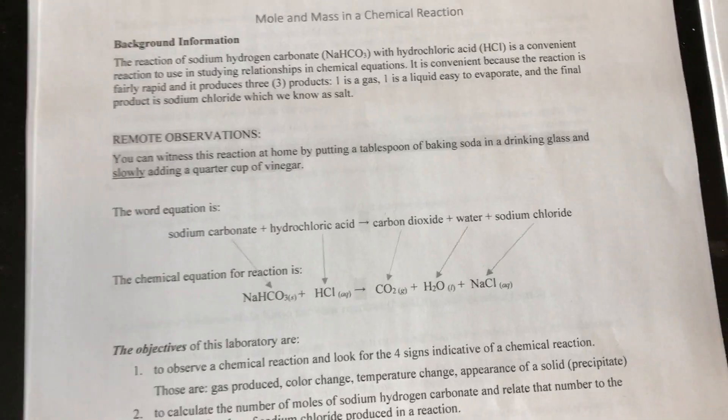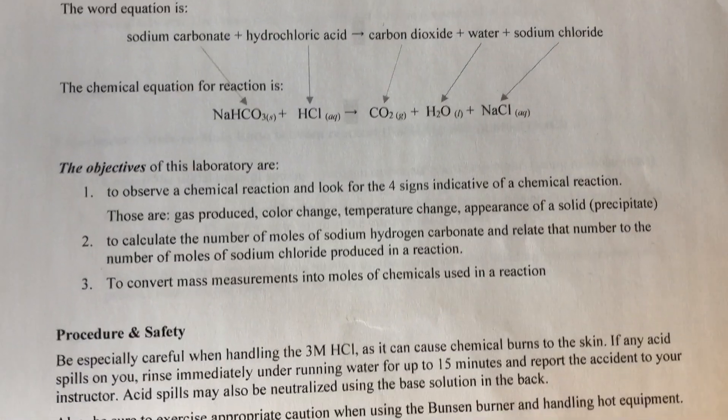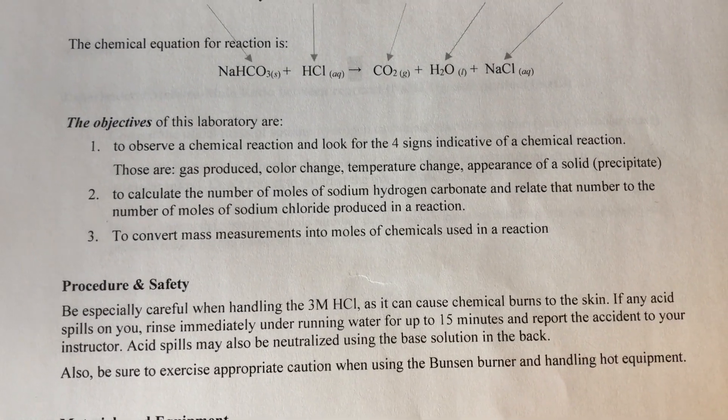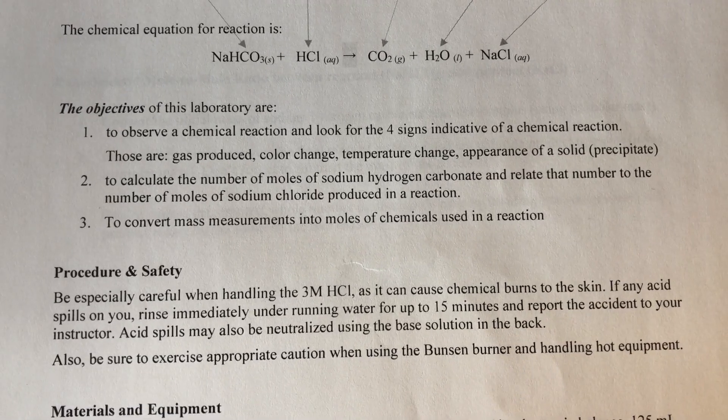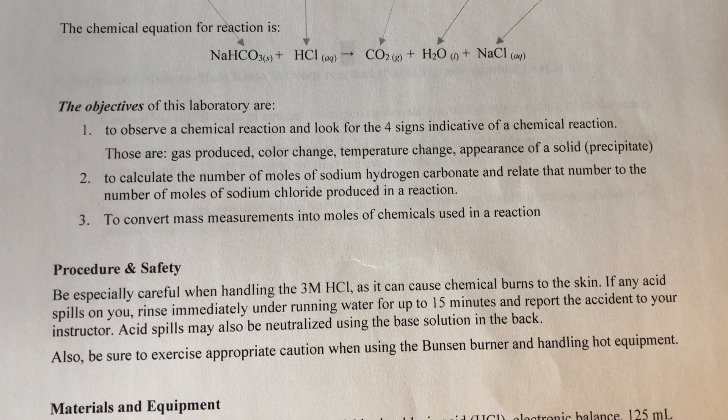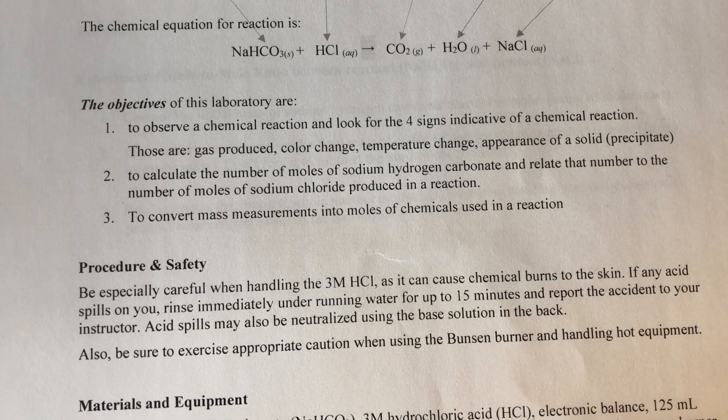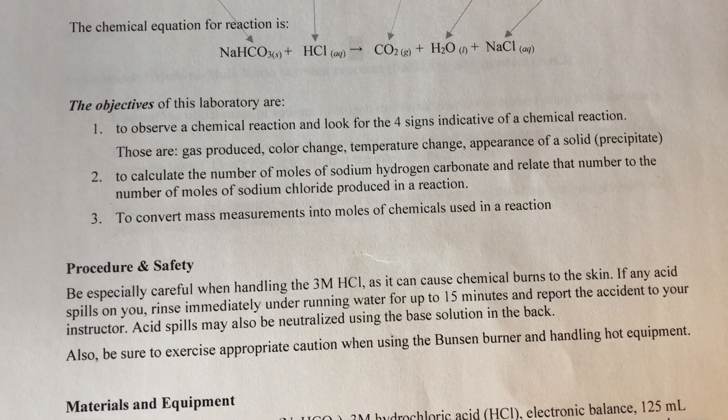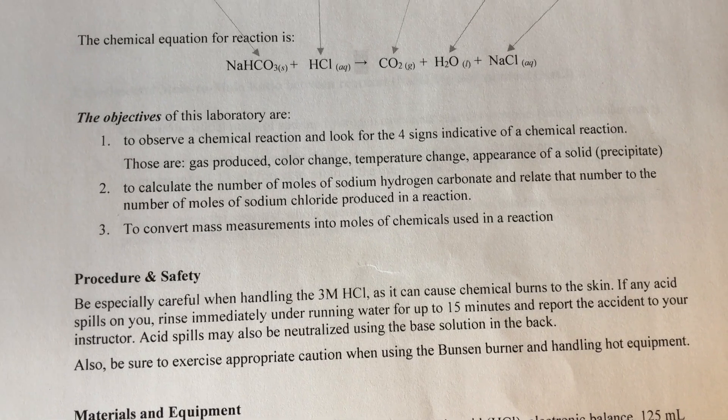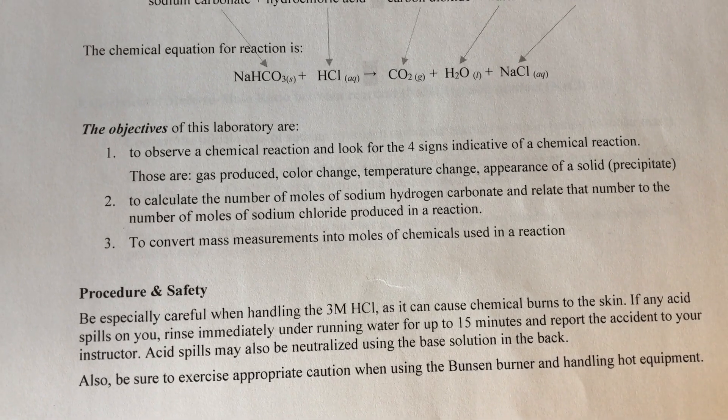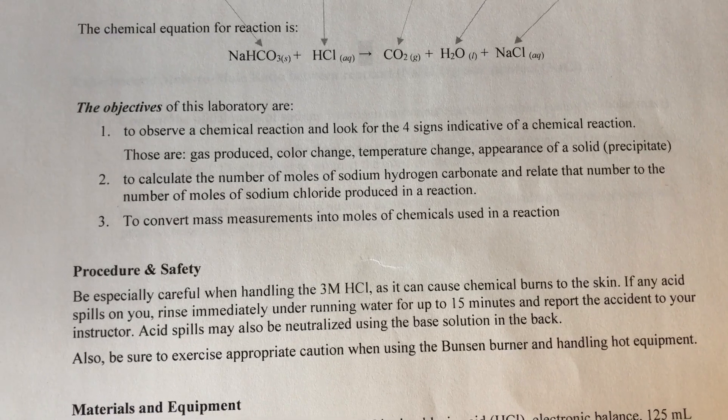We're going to do a chemical reaction and this is the reaction we're going to do here. We're going to put sodium bicarbonate, NaHCO3, with some hydrogen chloride, hydrochloric acid, and we will produce carbon dioxide, water, and sodium chloride.